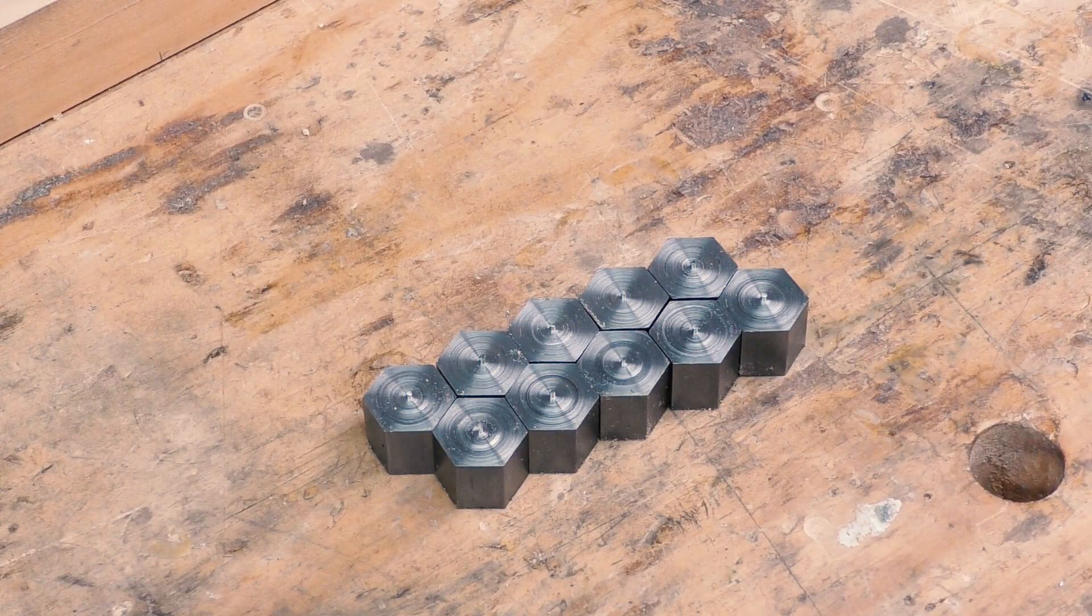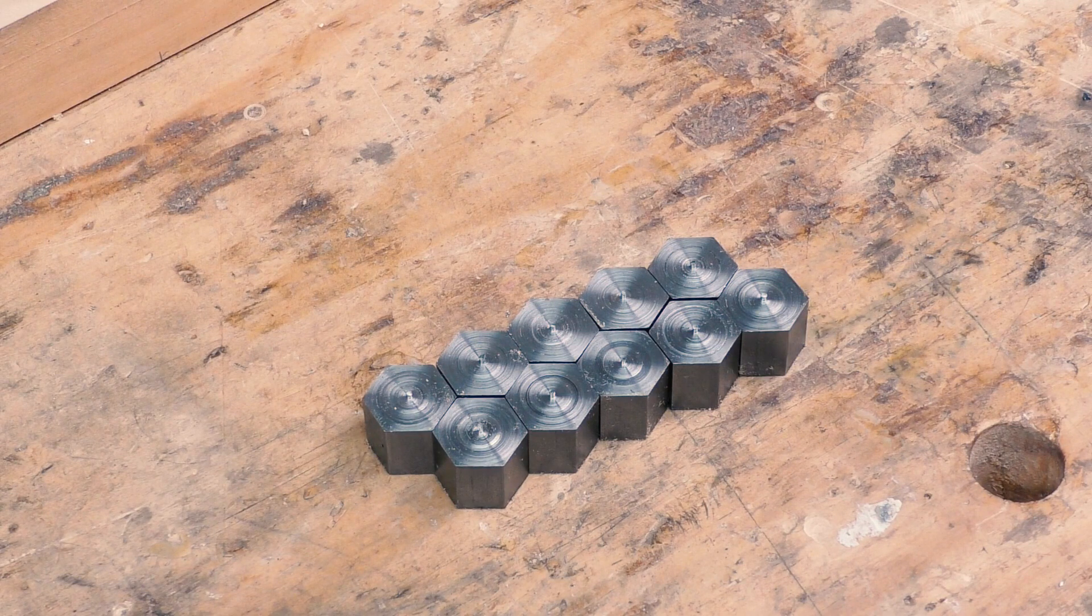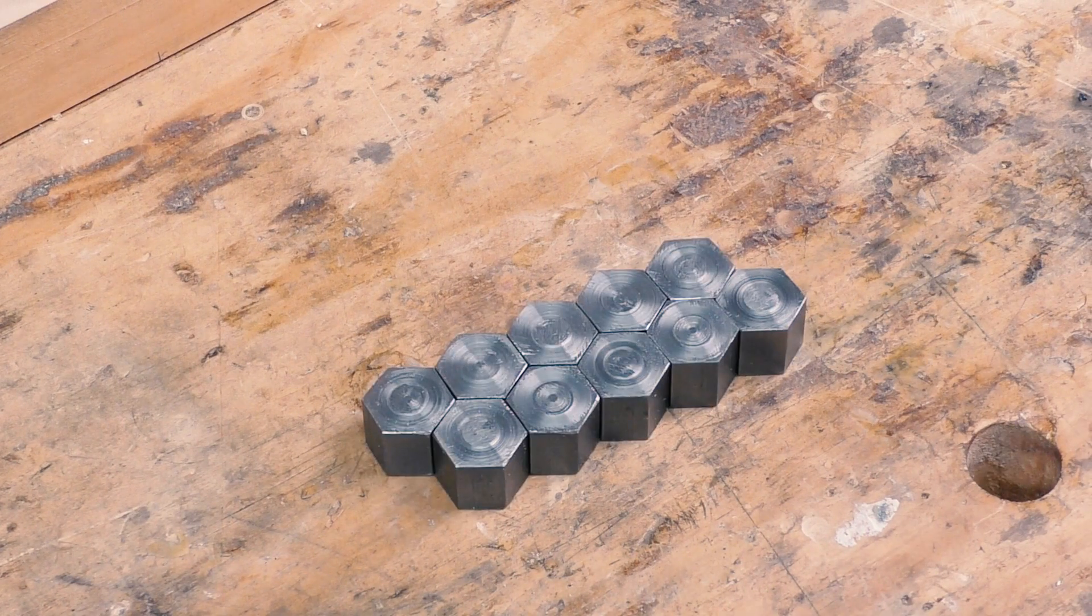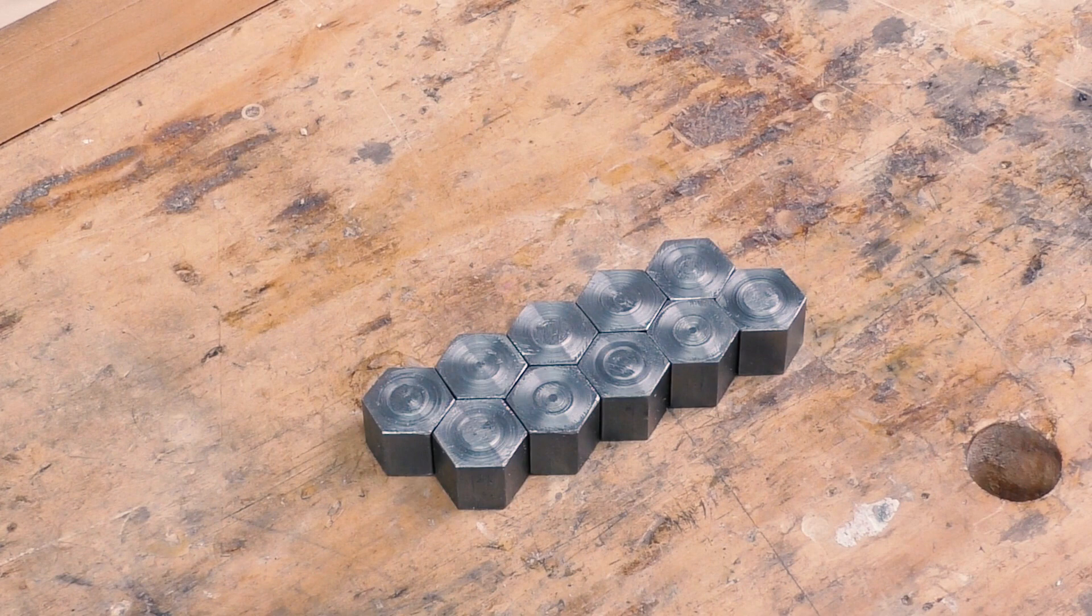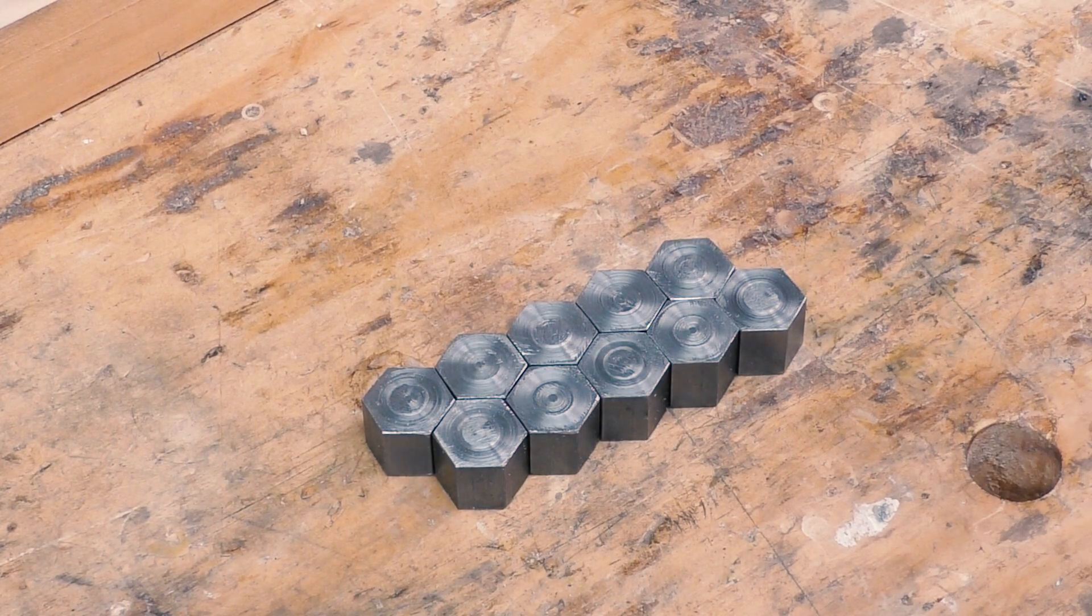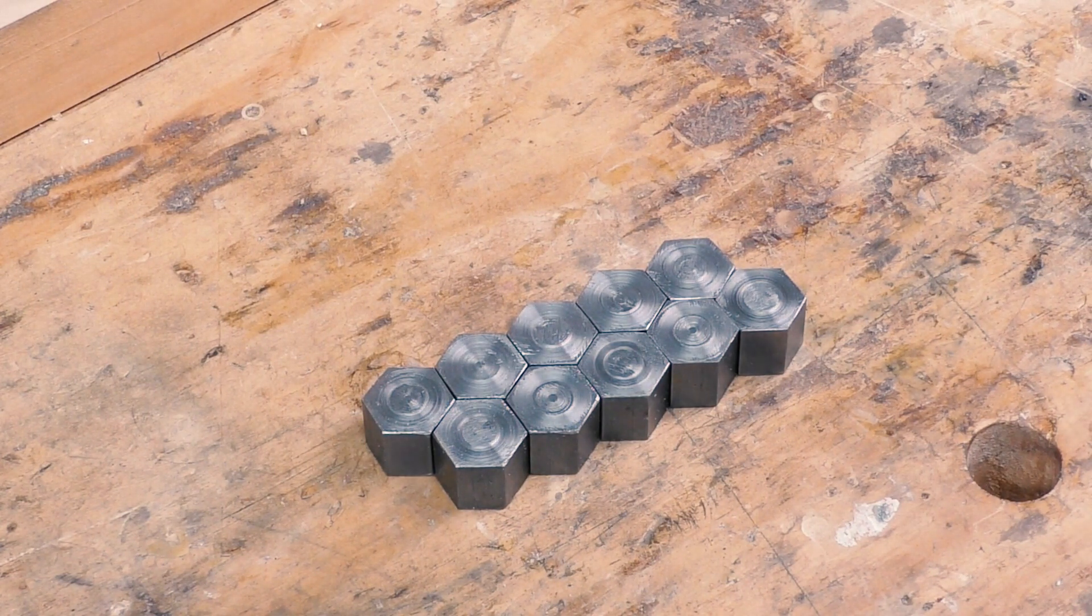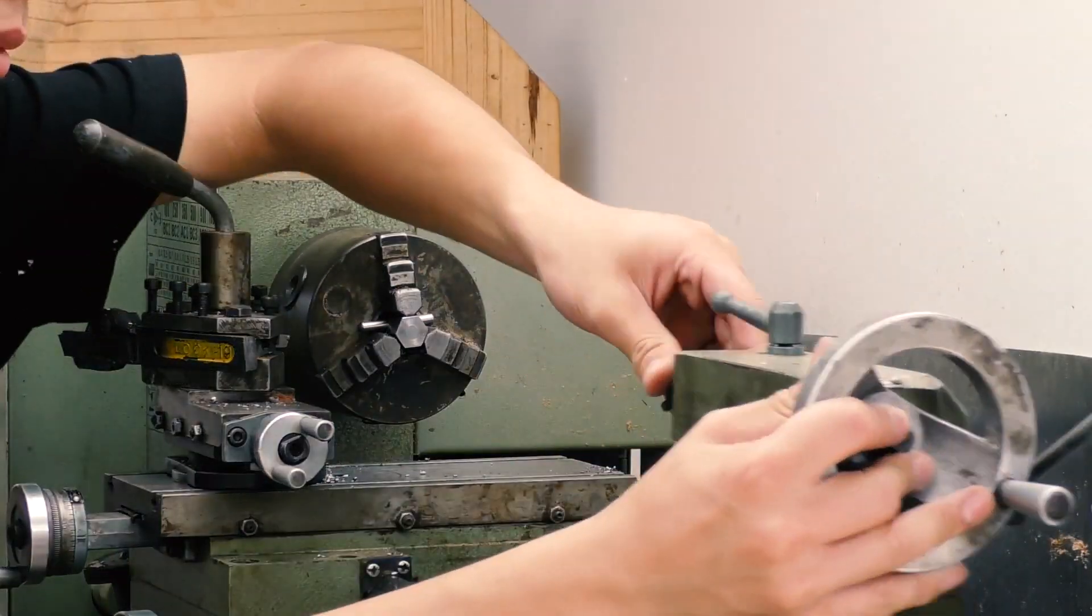So I cut out ten of them instead of eight. Yes, I forgot to deburr them. Having ten of them would mean that my success rate at turning the right diameter would only need to be eighty percent instead of one hundred percent, but it is still a huge challenge for me. Now I can drill the center hole on all ten of them.